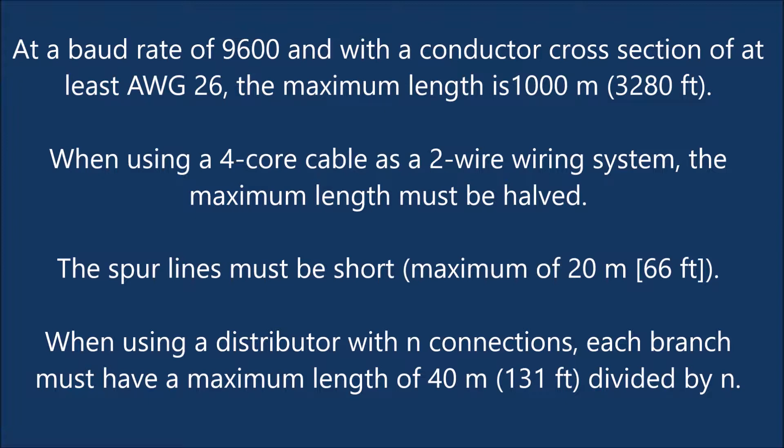The spur lines must be short — a maximum of 20 meters (66 feet). When using a distributor with N connections, each branch must have a maximum length of 40 meters (131 feet) divided by N.